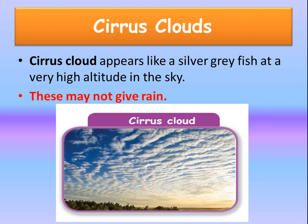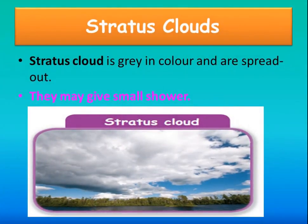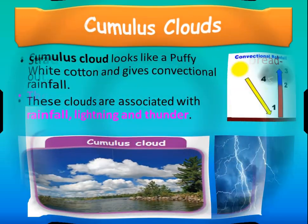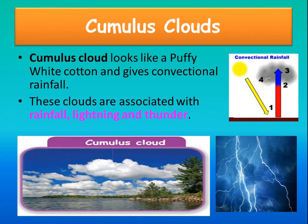The second form of cloud is a stratus cloud. They are also grey in colour and are spread out — very much distributed. They may give small showers. Have you seen puffy white cotton-like clouds in the sky? Those clouds are the cumulus clouds. The cumulus cloud looks like a puffy white cotton and gives convectional rainfall.